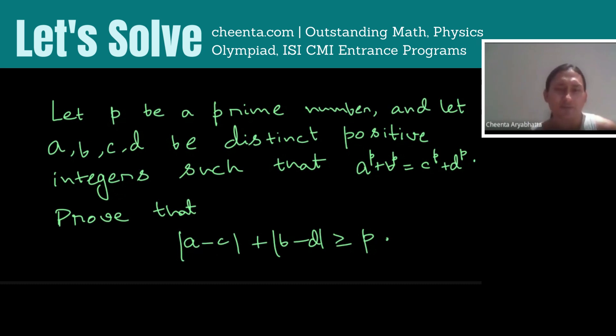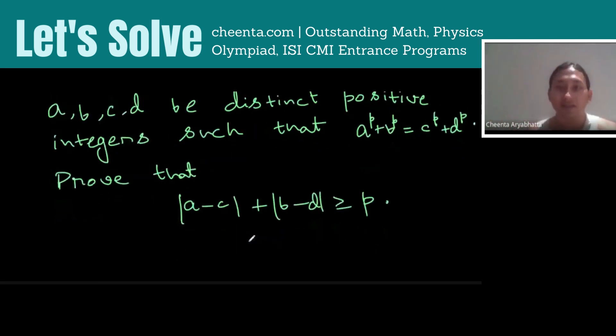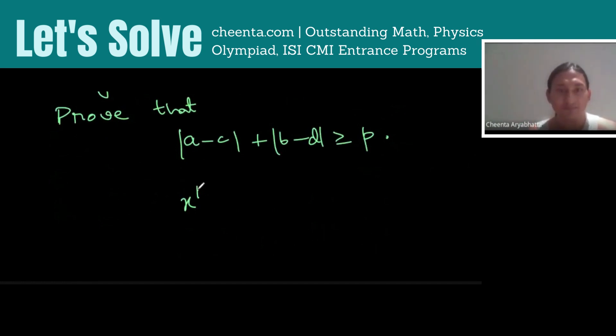Let me tell you really quick what this means. It means if this equation holds, then A cannot be very close to C and B cannot be very close to D. In fact, if we consider the equation, say X^P + Y^P equal to some constant K,